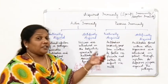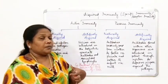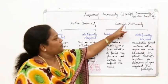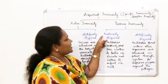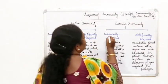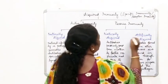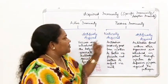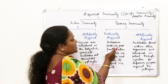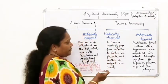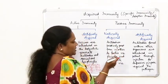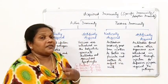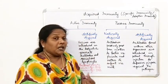Next is passive immunity. Here, antibodies from one individual are passed on to another individual. Passive immunity is again of two types: naturally acquired and artificially acquired. In naturally passive immunity, antibodies passively pass from mother to fetus via the placenta, and from mother to infant via milk.